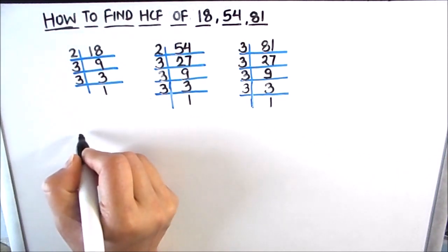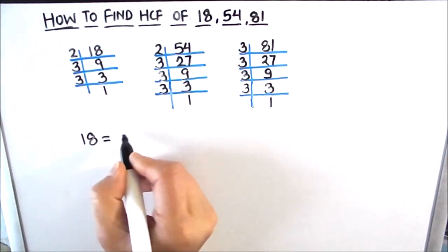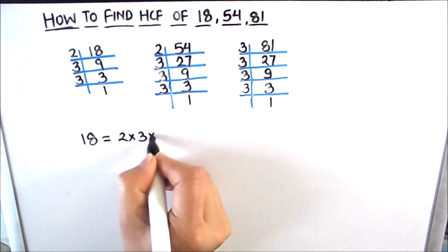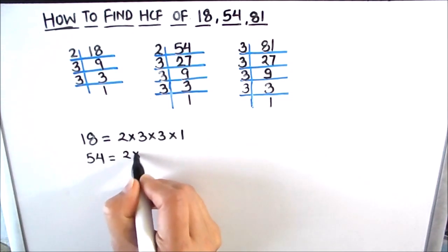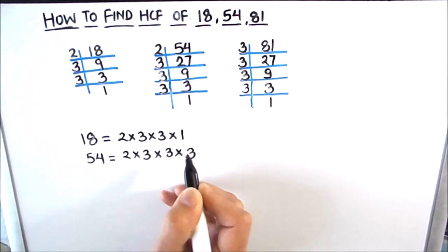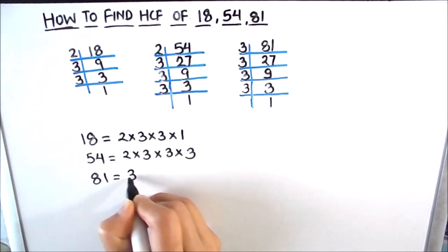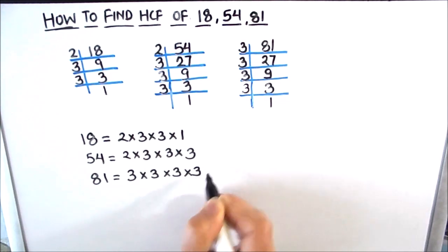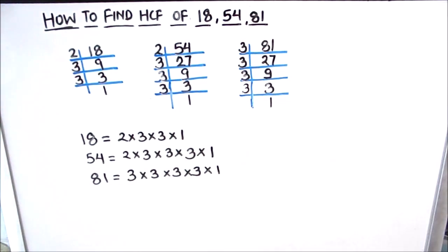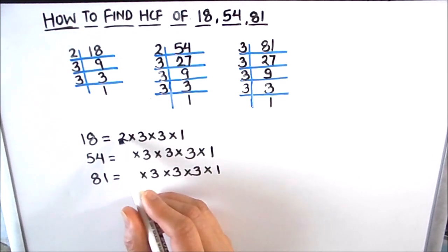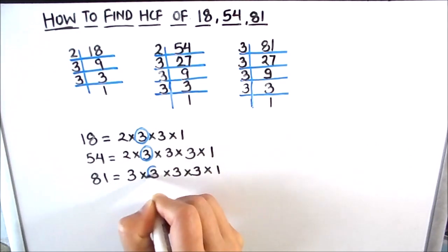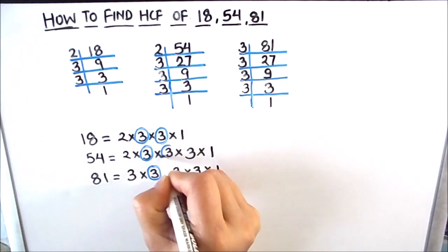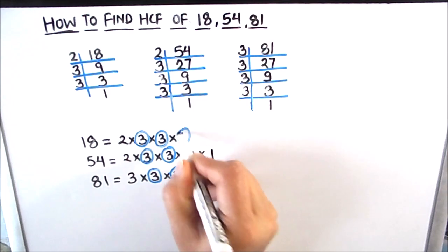Now we have the factors of all three numbers. Factors of 18 are 2 × 3 × 3 × 1. Factors of 54 are 2 × 3 × 3 × 3 × 1. Factors of 81 are 3 × 3 × 3 × 3 × 1. We can see that 2 is common to 18 and 54 but not to 81. However, 3 is common to all three numbers, and another 3 is also common to all three numbers. 1 is common to all three numbers.